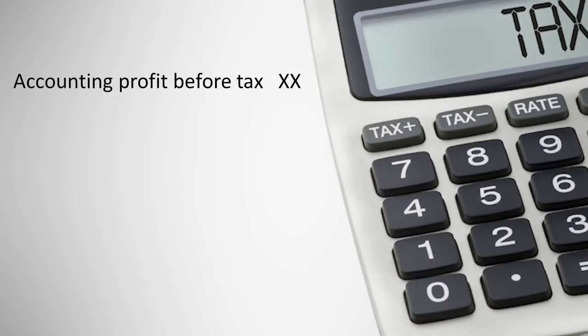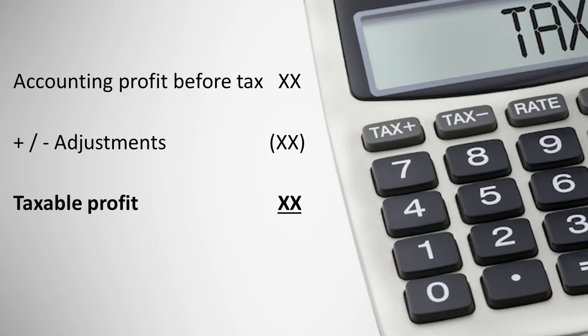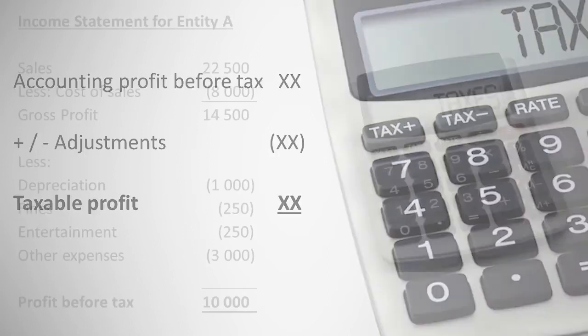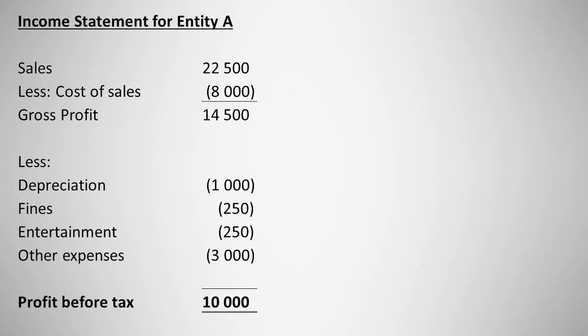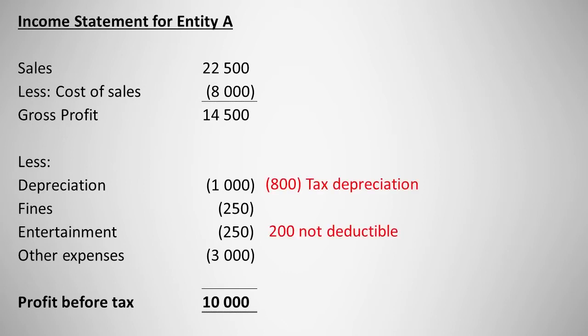To determine taxable profit, we start with accounting profit before tax and then adjust it for items that are treated differently for tax purposes. The result will be taxable profit. Consider the income statement for Entity A: if tax depreciation is $800 and $200 of entertainment expenses are not deductible for tax purposes, what will Entity A's current tax expense be?